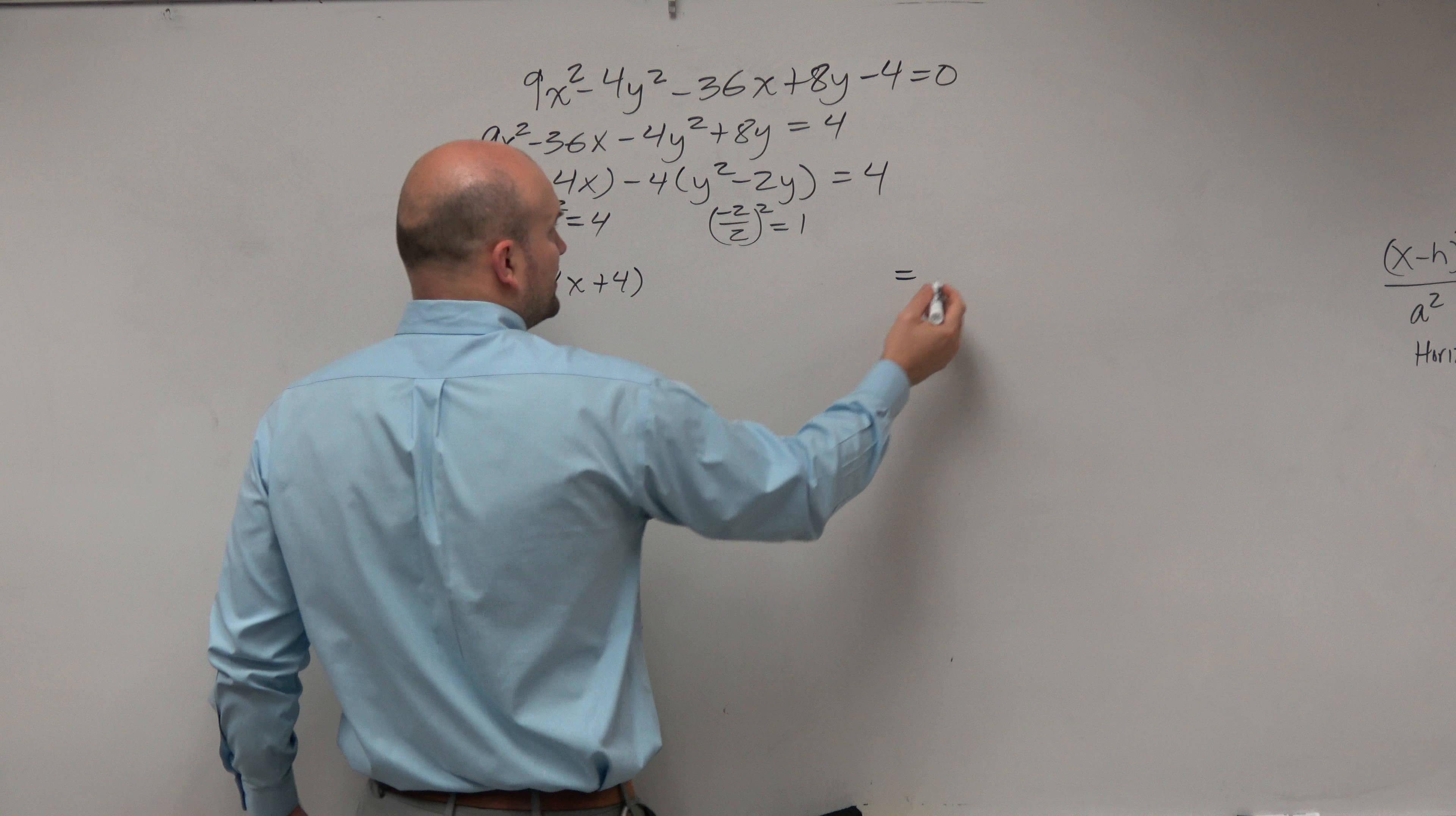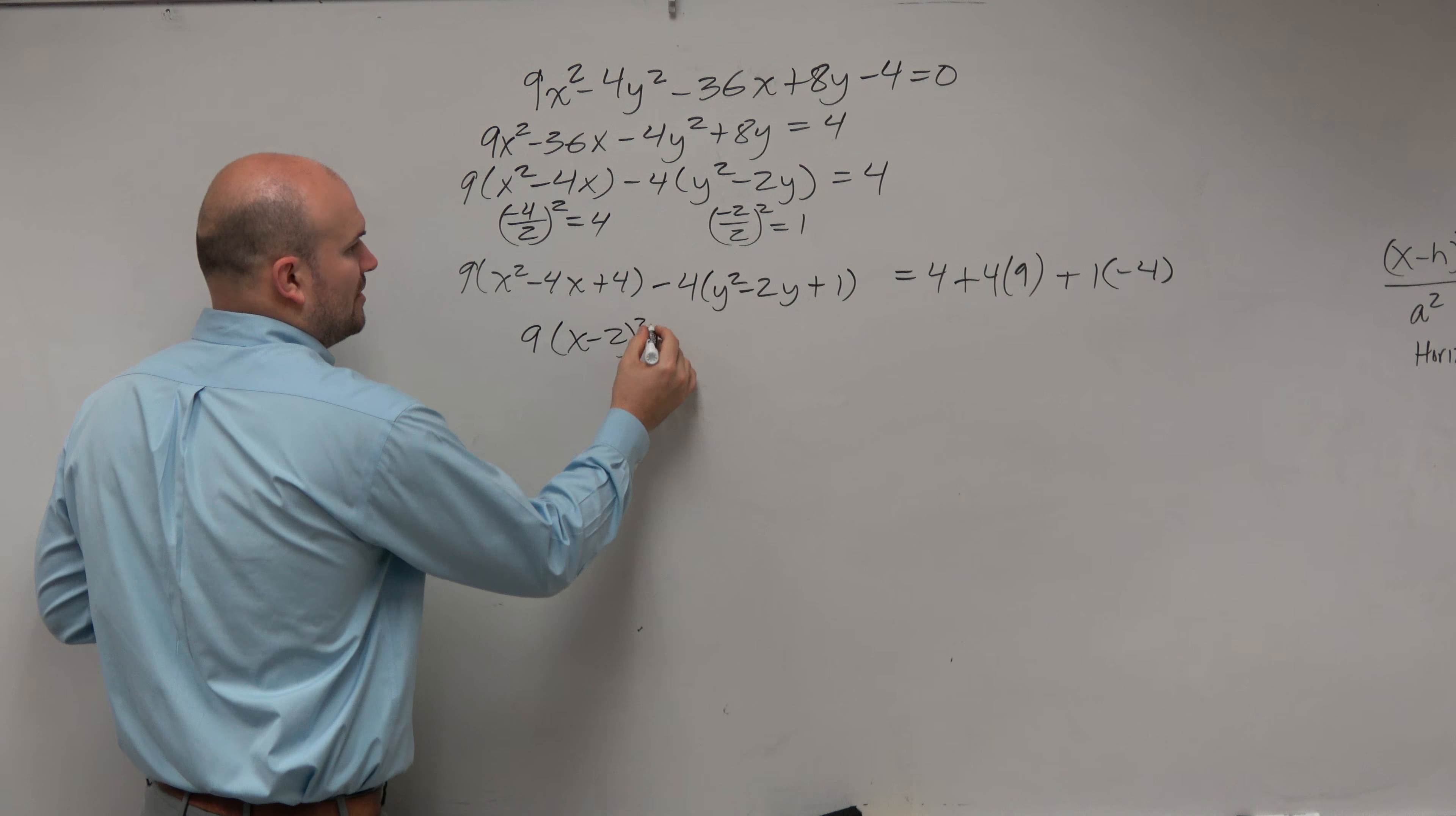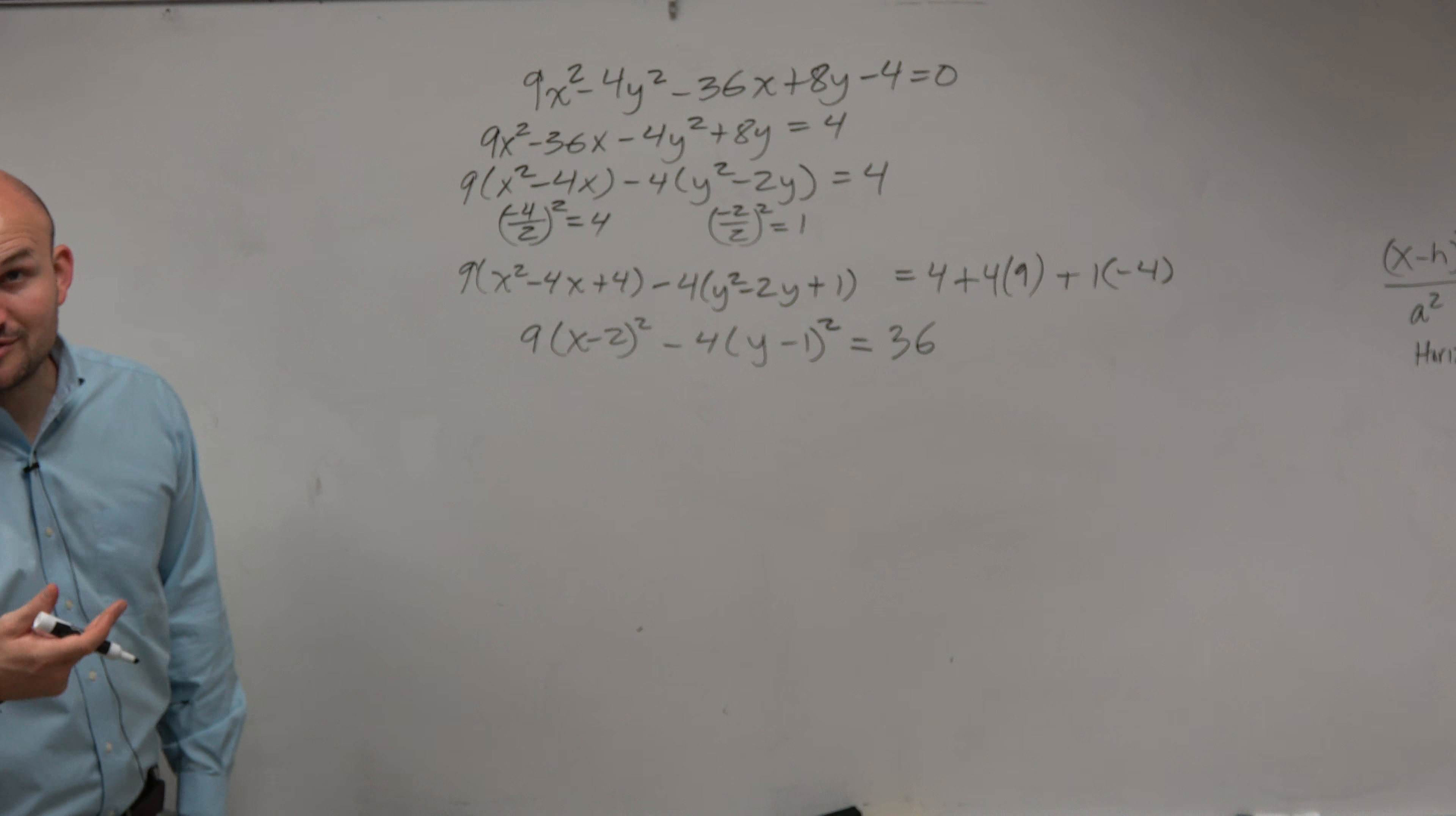Now just remember, guys, when you're adding something into an equation, whatever you do on one side, you have to do on the other side, right? So I'm just going to put this 4 over here and immediately put them on the other side once I do it. So that 4 is that 4. But I added a 4 here on the left side. So I'm going to add a 4 on the right side. But again, remember, I'm not really adding a 4 here, am I? I'm adding a 4 that's being multiplied by a 9. So that means I need to multiply this one by a 9. Then we have a negative 4 times y squared minus 2y plus 1. But again, I'm not really adding a 1. I'm adding a 1 that's being multiplied by a negative 4. That means I need to multiply this 1 by a negative 4.